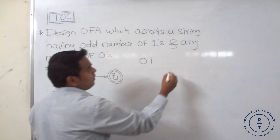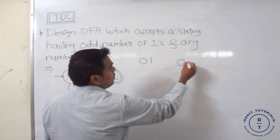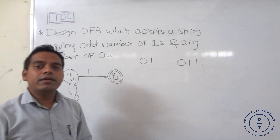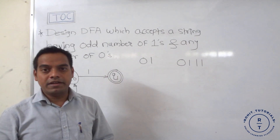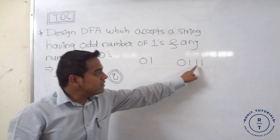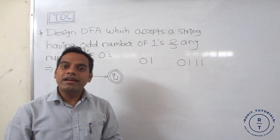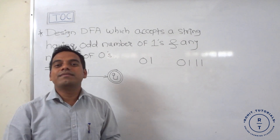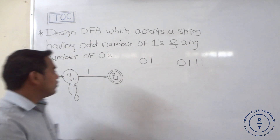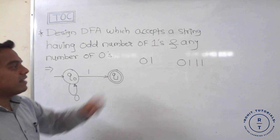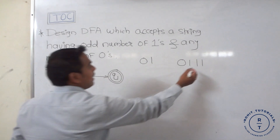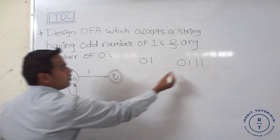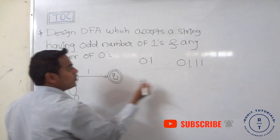Now consider the string '0111' — three ones are available, which is an odd number, so this string is accepted. We need to design the transition for three ones. At q0, '0' keeps us at q0 and '1' takes us to q1. Now what happens when '1' appears at q1?